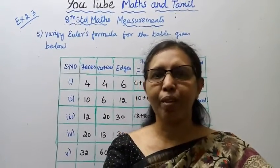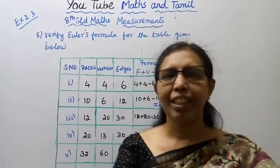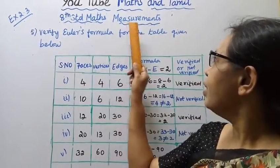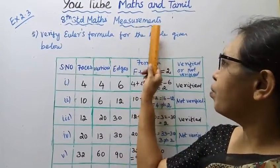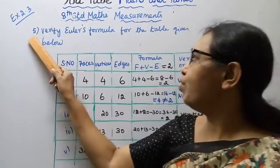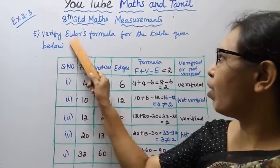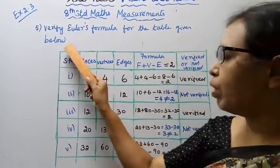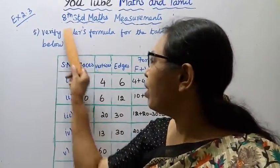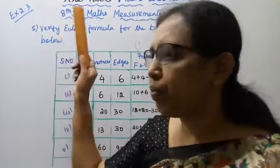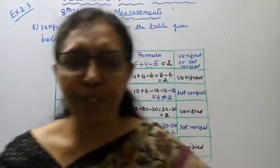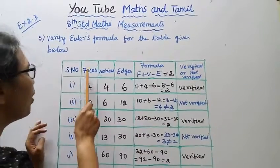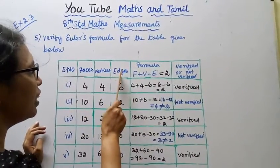Hello students, welcome to Max and Tumble channel. Age standard, max term one, measurements exercise 2.3. We will verify the formula for the table given below. Under verification, we check the faces, vertices, and edges.